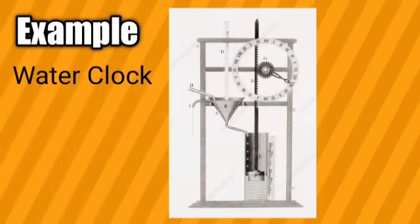The water clock is also a time-measuring device in which water falls constantly. This constant movement of the water moves the clock, with the help of which the time can be measured.